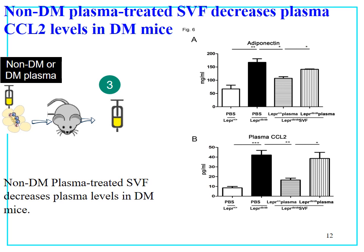Next, we examined adiponectin and plasma CCR2 levels in those mice. We found that db/db mice demonstrated increased adiponectin and plasma CCR2 compared with control mice. SVF treated with non-diabetic plasma decreased adiponectin and plasma CCR2 levels after injection into the adipose tissue. However, SVF treated with diabetic plasma had no such effect, suggesting that non-diabetic plasma-treated SVF could decrease adiponectin and plasma CCR2 levels in diabetic mice.